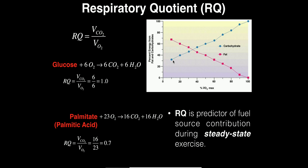At a very low exercise intensity — such as 10% of VO2 max, which is close to rest — we have a higher percent contribution to energy production from fat than from carbohydrate, but we still have contributions from both. In that case we're still going to have an RQ between 0.7 and 1, but it might be closer to 0.7 than to 1, because at 10% VO2 max we have a much higher percent contribution from fat.